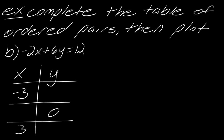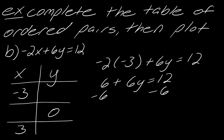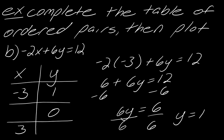Let's start by plugging x = −3 into this equation. So I have −2(−3) + 6y = 12. Negative two times negative three is 6, so I get 6 + 6y = 12. Subtracting 6 gives 6y = 6, then dividing both sides by 6 gives y = 1. That will be the first entry in my table.